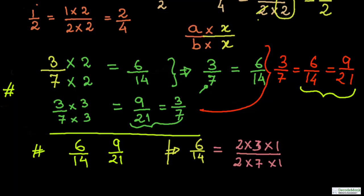Breaking numbers into factors requires practice, so practice as much as possible. For 6 upon 14: 6 is 2 threes and 14 is 2 sevens. Cancelling out the common factor 2, we divide 2 by 2 to get 1. Since 3 by 7 cannot be divided further, we get 3 upon 7. So we have concluded that 6 upon 14 is equal to 3 upon 7.